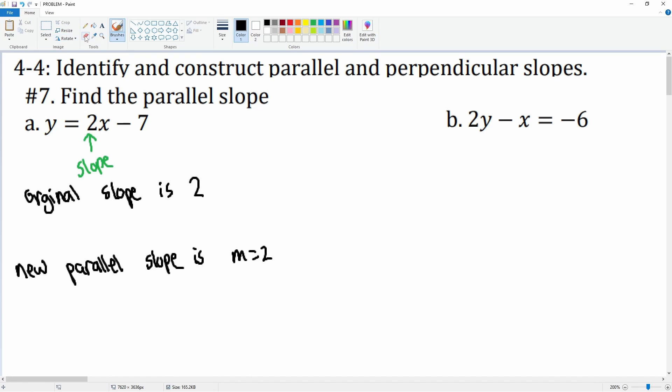You don't have to write 'slope,' you can just write the letter m. So you can write original m equals 2, and then new parallel slope is m equals 2, because for it to be parallel, the slopes are the same.